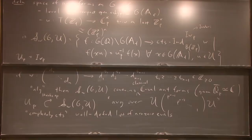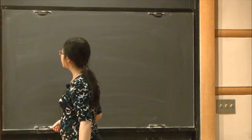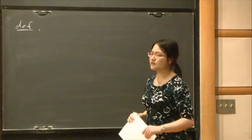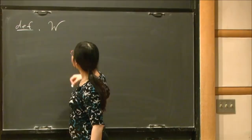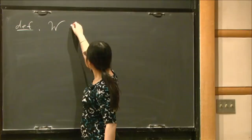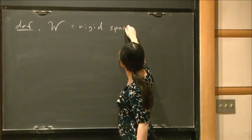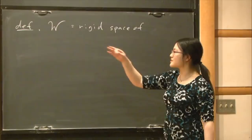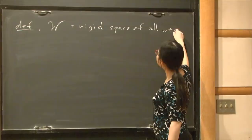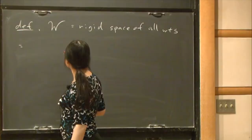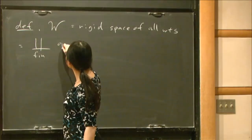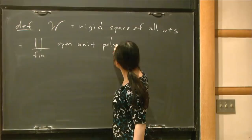The eigenvariety is just going to keep track of these eigenvalues. The space of weights W is the rigid space of all possible continuous characters from T(C_p) to C_p^×. It turns out to be a finite disjoint union of open unit polydiscs of dimension n-1.